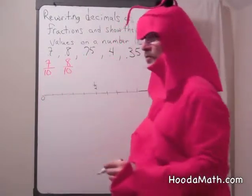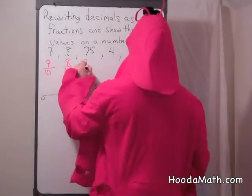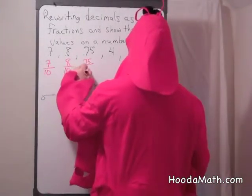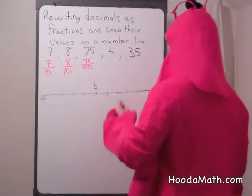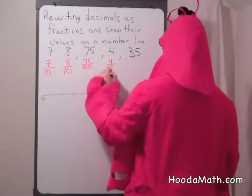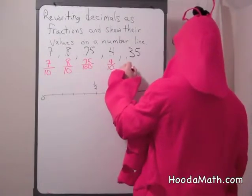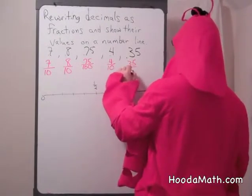When we have two places to the right of the decimal, that's the hundredths. This is 75 one hundredths. This is 4 tenths. And this is 35 hundredths.